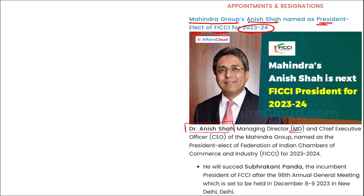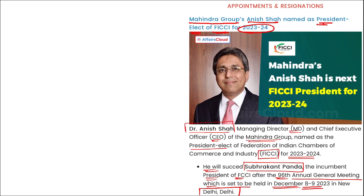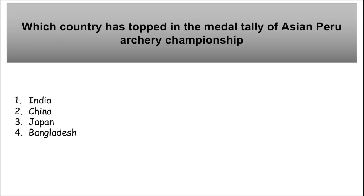Regarding appointments: Anish Shah, MD and CEO of the Mahindra Group, has been named as the President-elect of FICCI for 2023-24. He will succeed Subrakant Panda after the 96th Annual General Meeting in December 8th and 9th in New Delhi. Also: India topped the medal tally of the Asian Para Archery Championship 2023 with 9 medals — 4 gold, 4 silver, and 1 bronze.